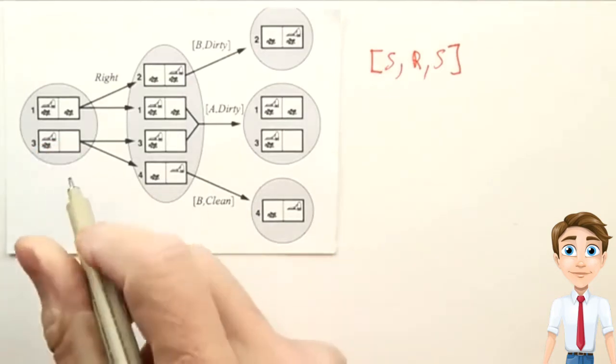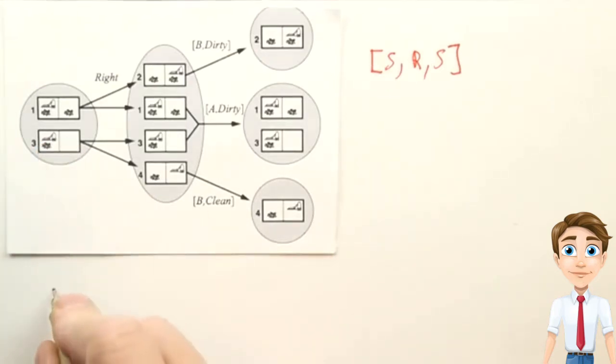So we start off in this belief state here, which is a diagram like this, and then we do a suck action, we end up in a new state.